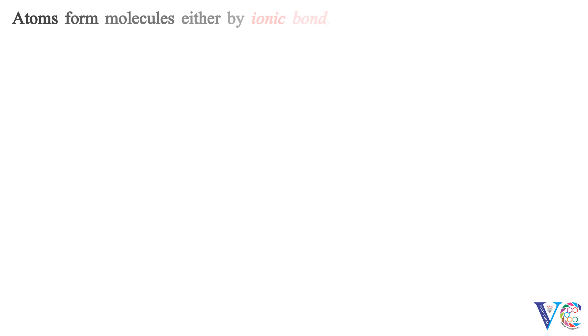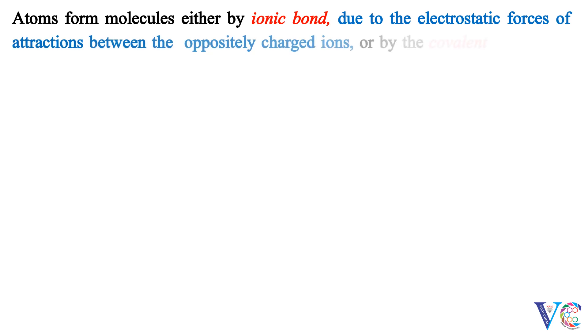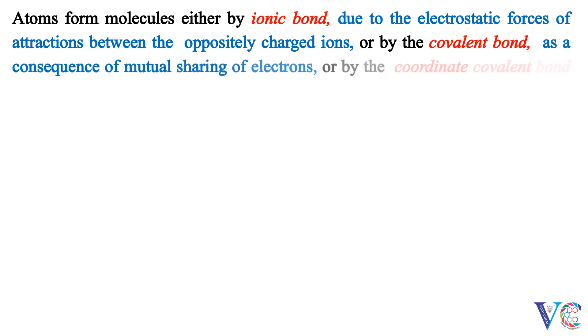Rotaxanes and Catenanes. Atoms form molecules either by ionic bond, due to the electrostatic forces of attractions between the oppositely charged ions, or by the covalent bond, as a consequence of mutual sharing of electrons, or by the coordinate covalent bond, as a result of sharing of donated pair of electrons.